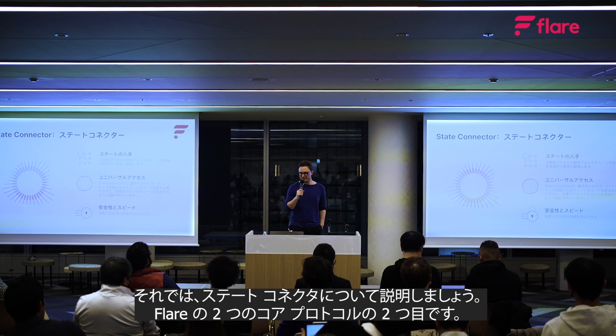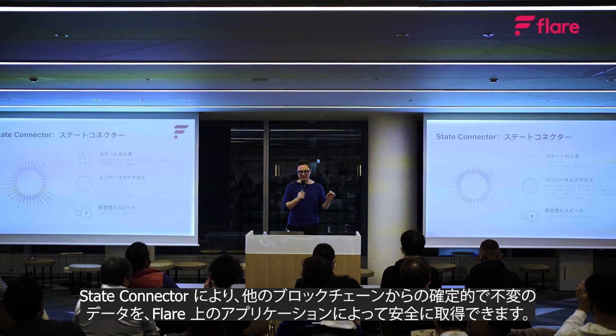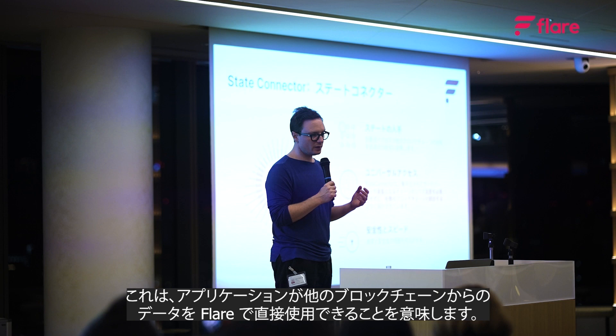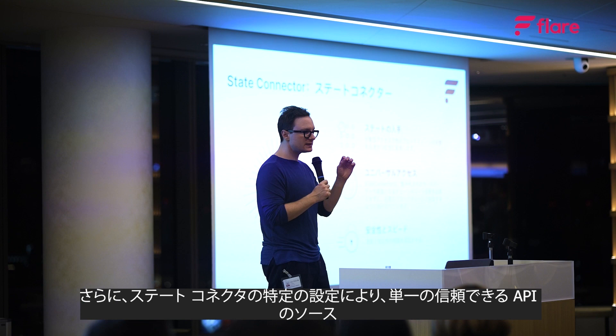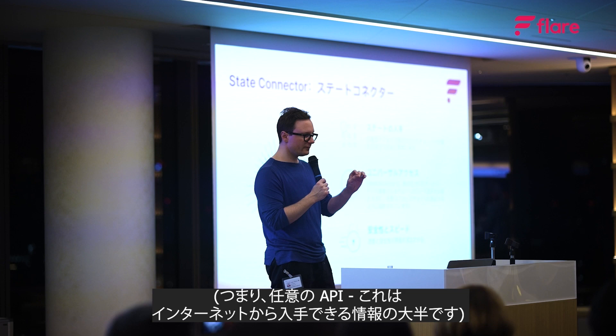Now let's talk about the State Connector, the second of Flare's two core protocols. The State Connector allows deterministic and immutable data from other blockchains to be securely acquired by applications on Flare, meaning an application can use data from other blockchains directly on Flare. Furthermore, a specific setting of the State Connector allows for data from single-source-of-truth APIs — essentially the majority of information available from the internet — to be conveyed to Flare for use with smart contracts.